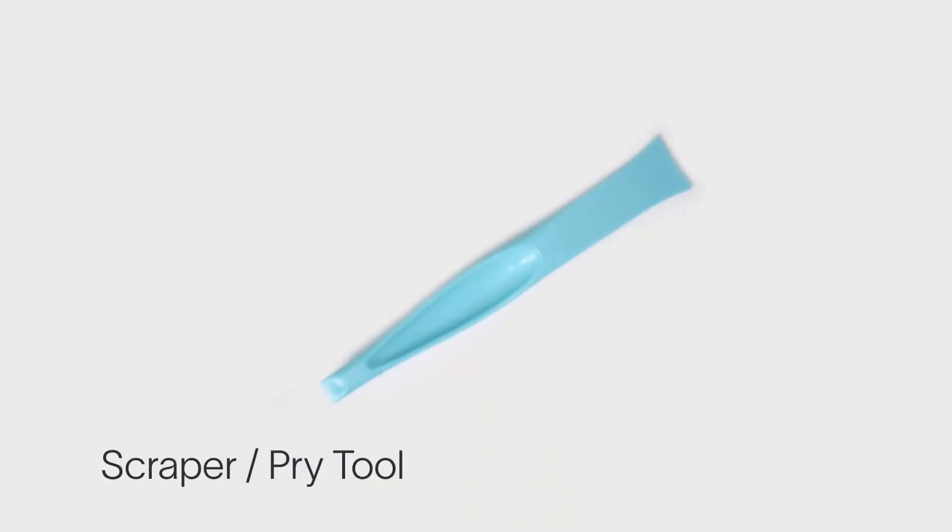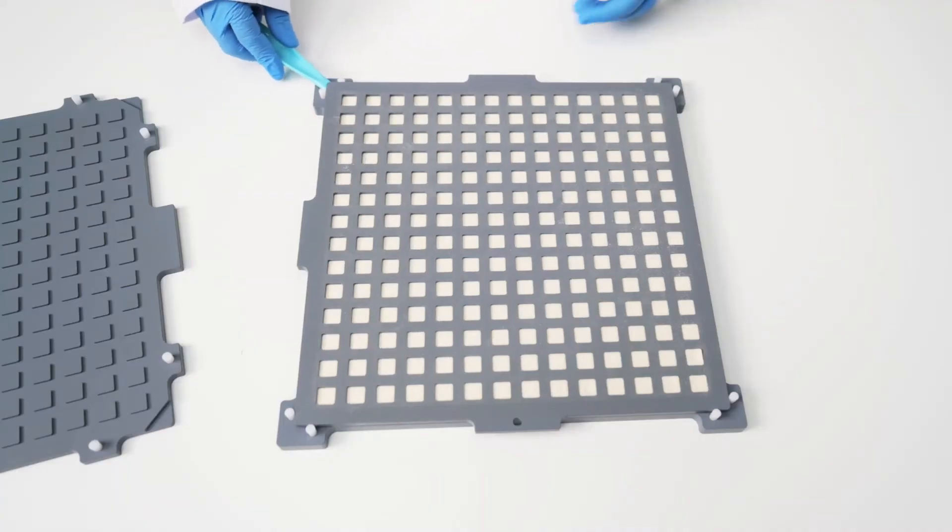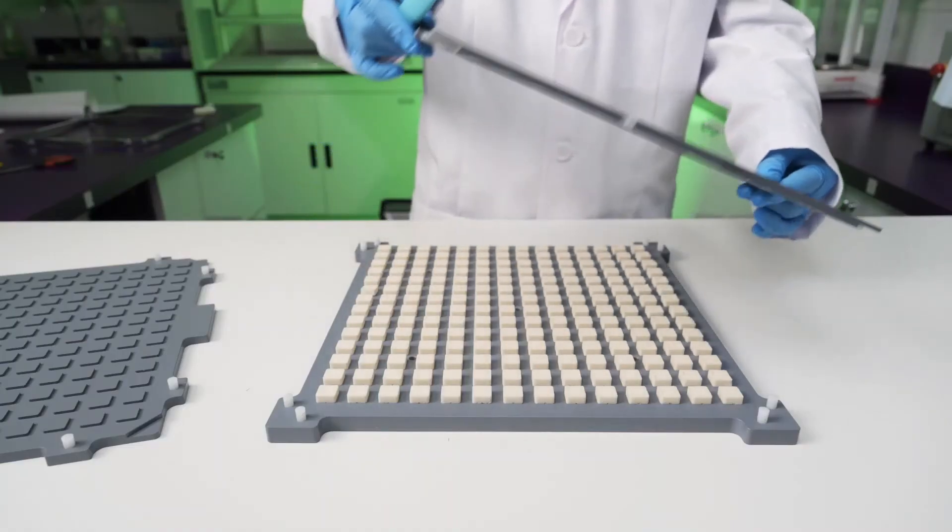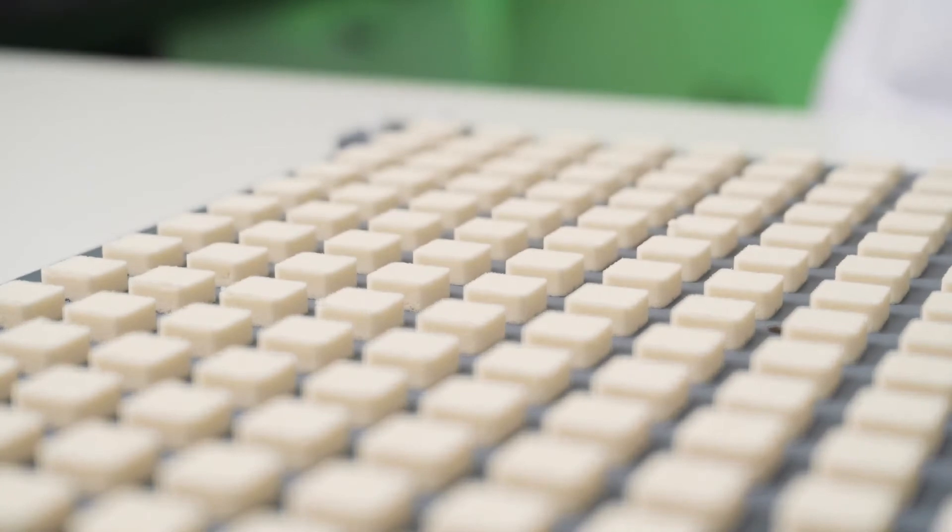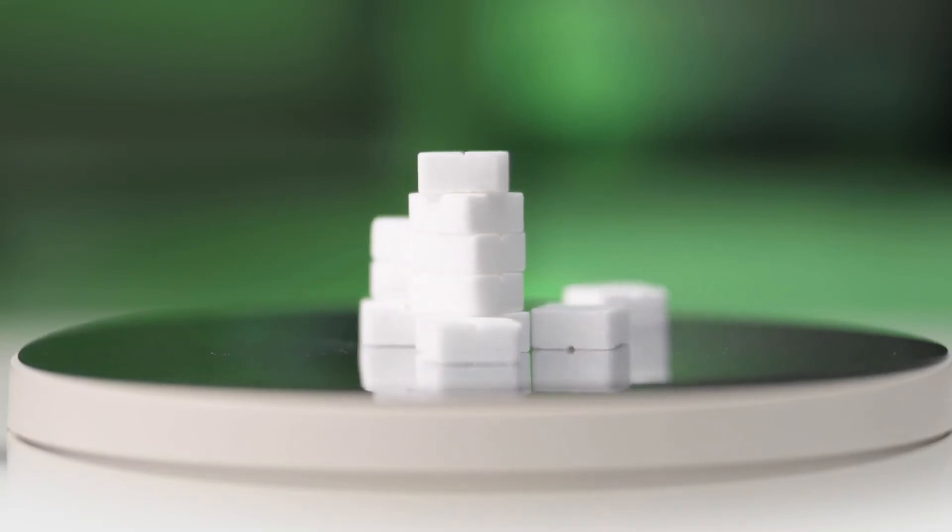Using the scraper slash pry tool, pry apart the cavity plate from the quarter score plate, revealing the batch of RDTs. No knocking or banging to get these tablets out. This system allows you to form, bake, and easily extract perfectly molded, delicate RDTs without hassle or additional equipment.